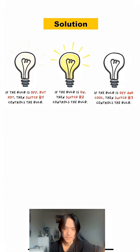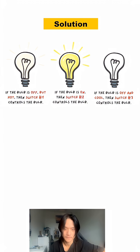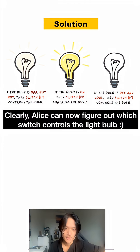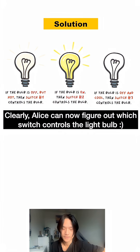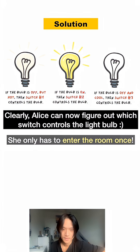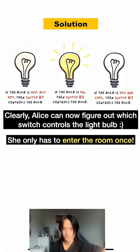Here's a summary of what we have — you can pause the video and think through it again. So clearly, Alice can now figure out which switch controls the light bulb. She only has to enter the room once. And that's the solution.